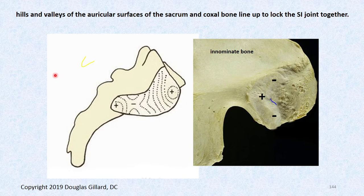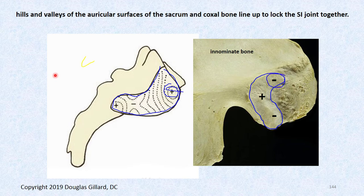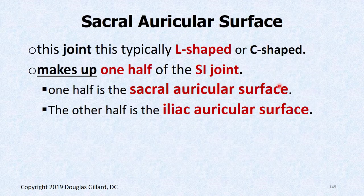Here's the ilium — you've already studied this bone. There's the L-shape or ear-shape auricular surface of the ilium. These two surfaces mate perfectly together. There's a slight valley on the ilium and a slight valley on the sacral side. In reality, unless you have an older male, it's hard to see on cadaver specimens. The sacral auricular surface is half of the SI joint; the other half is the iliac auricular surface. The surface is typically L-shaped or C-shaped.